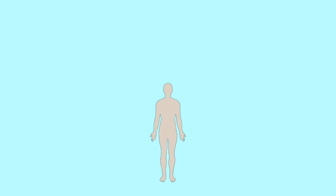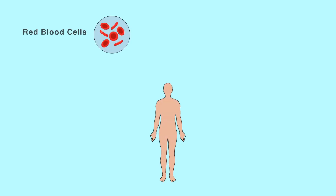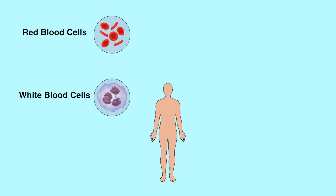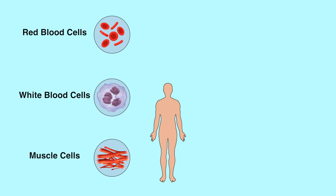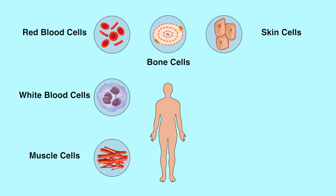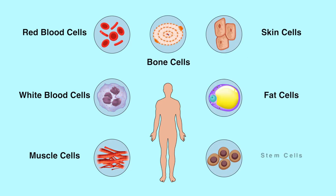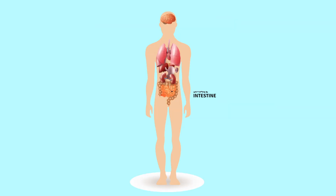Some most important types of cells are red blood cells, white blood cells, muscle cells, bone cells, skin cells, fat cells, and stem cells. Inhi cells se anatomy ki study aage badhi.